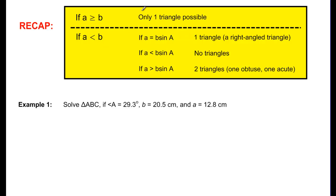So this is our check. We first see if A is less than B, and if it is, we check if A is greater than B sine A — that gives us the ambiguous case. Otherwise we'll have either no triangles or only one triangle. Here's our first example: solve for triangle ABC if angle A equals 29.3 degrees, side B equals 20.5, and side A equals 12.8.